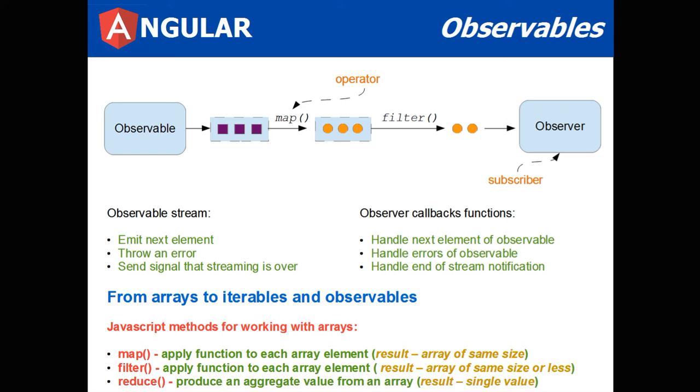An observable stream emits the next element, could throw an error, and could send signal that streaming is over. When I say emit the next element, as the user's typing character at a time, it's emitting that next element into the stream. You can receive all those elements as soon as they're emitted, or you could use a debounce function and wait for several of them to appear before you grab the group of characters in the stream.